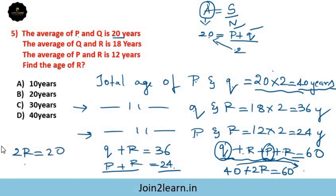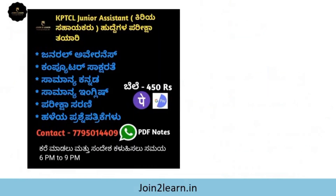2R equals 20, therefore R equals 20 divided by 2, R equals 10 years. Option A is the right answer. So different problems are all solved.